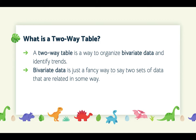So what is a two-way table? A two-way table is a way to organize bivariate data and identify trends. What is bivariate data? It's just a fancy way to say two sets of data that are related in some way.